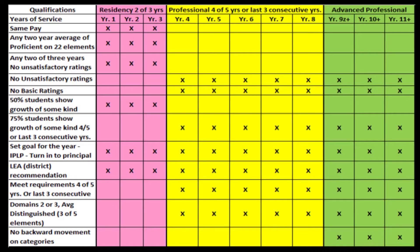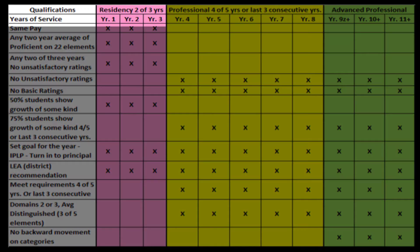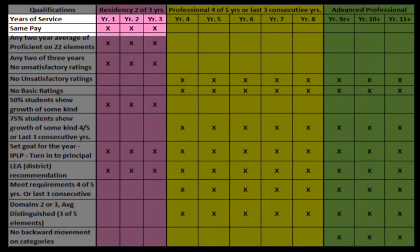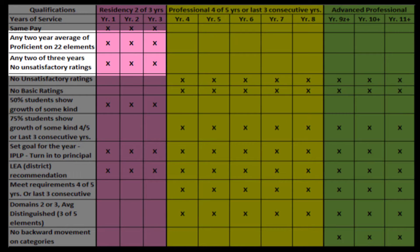First of all, let's look at residency. New teachers will be in residency for the first three years of service. For the indicated items, you must qualify for any two of those three years, which gives the new teacher room for at least one bad year. They will get the same pay for those three years. They must also average proficient on the Danielson Evaluation Model.